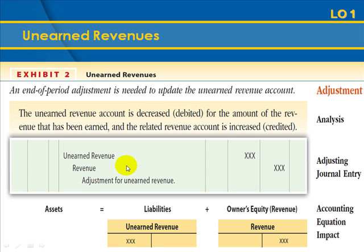Once the time has passed or we have done the work to earn the money, we adjust the unearned revenues account by debiting unearned revenue and crediting the associated revenue account. In this adjusting entry, we are converting a liability to a revenue — unearned revenue is the liability, and the revenue account is the revenue. Notice that we are not using cash in the adjusting entry.